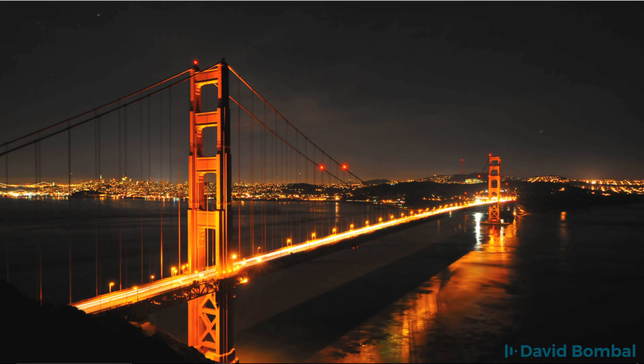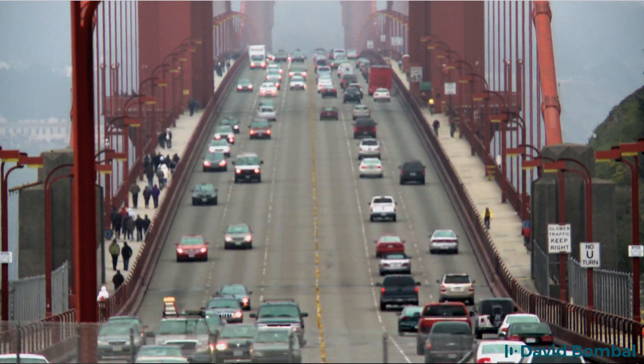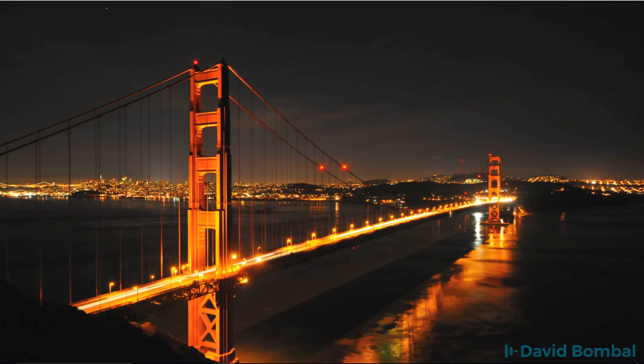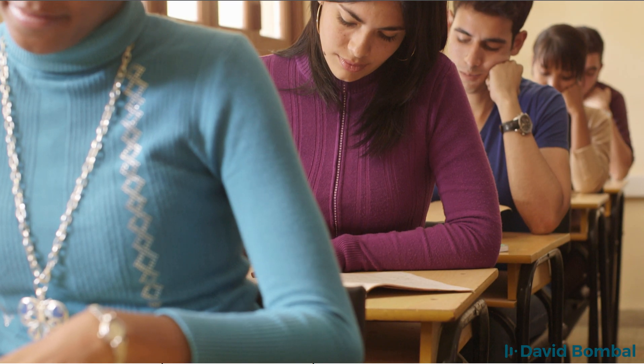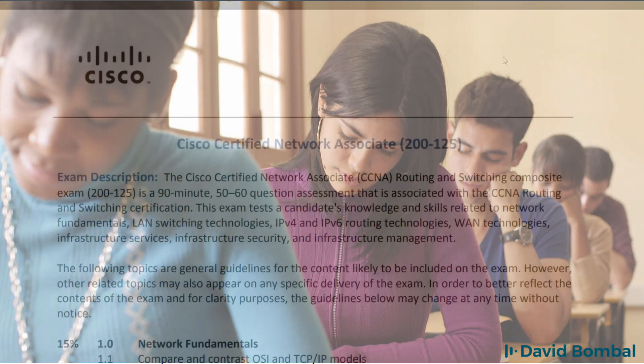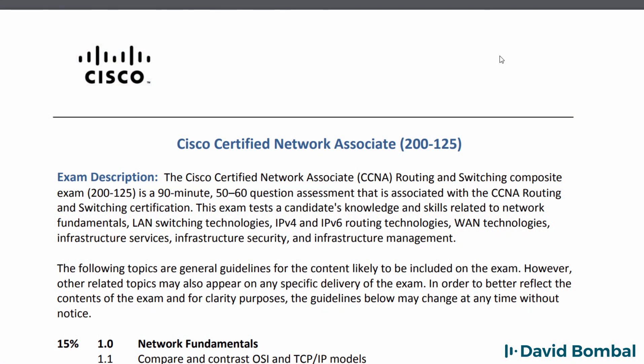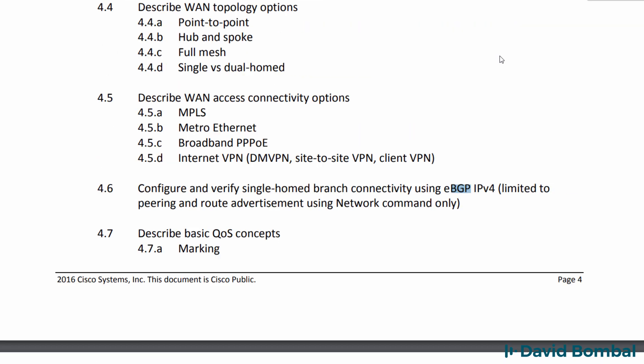BGP, or Border Gateway Protocol, is now a topic on the CCNA exam. You need to learn BGP for your CCNA exam. On the exam topics we can do a search for BGP, and in the list of topics we have: configure and verify single homed branch connectivity using eBGP IPv4. This is limited to peering and route advertisement using the network command only.